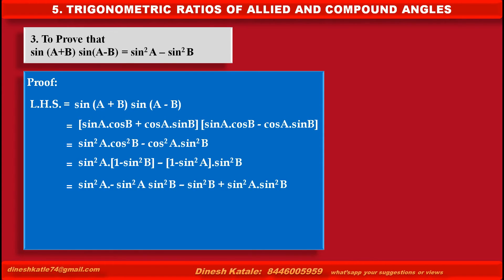we get sin²A minus sin²A · sin²B minus sin²B plus sin²A · sin²B. The sin²A · sin²B negative and positive terms cancel each other, and the remaining terms are sin²A minus sin²B.